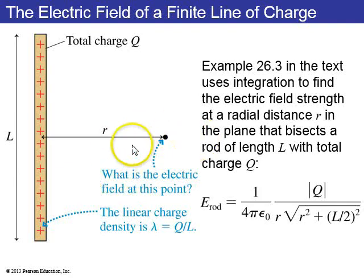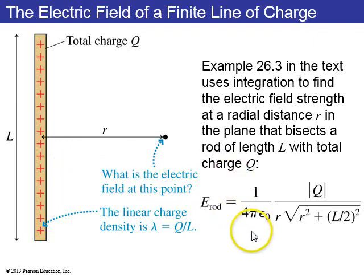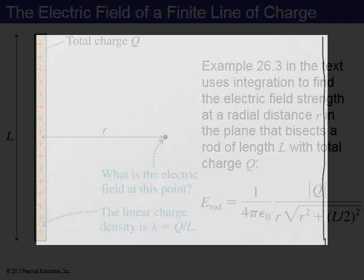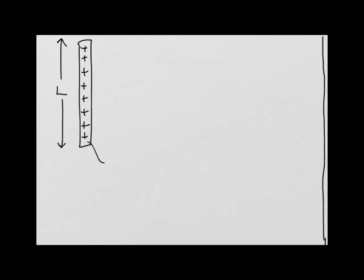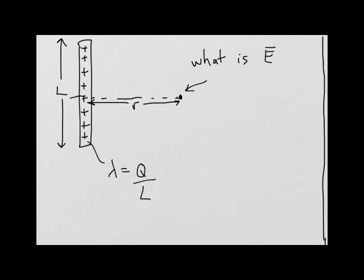We again consider a rod of length L and charge Q to evaluate this integral. We start with a line of positive charge of length L with charge density lambda equals Q over L, and we'll find the electric field at a point a distance r away from the center of the rod.